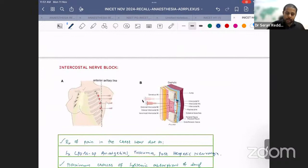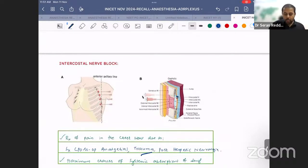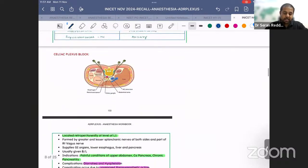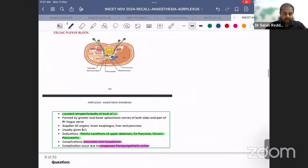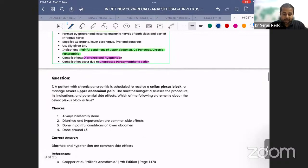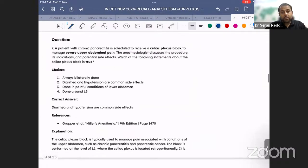In our workbook, we discussed that for trauma and post-herpetic neuralgia, anything over the ribs, you can use intercostal nerve block. If that's not there, the next question is thoracic epidural. We discussed supraclavicular block as a type of brachial plexus block. We discussed celiac plexus block located at the top of L1 for painful conditions of upper abdomen, CA pancreas, and chronic pancreatitis.